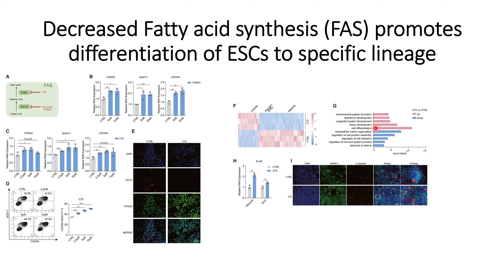Gene ontology analysis revealed similar findings: pathways that are upregulated include cell differentiation, tissue development, and other developmental pathways, whereas pathways that are downregulated are related to cell regulations, cell junction assemblies, and response to ketone, which are more prominent in embryonic stem cells.